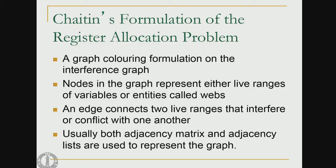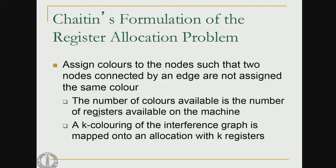We require both the adjacency matrix and the adjacency list to represent the graph. The basic idea is to assign colors to the nodes such that no two nodes connected by an edge are assigned the same color. If we assign the same color it implies assigning the same register, which is why interfering nodes cannot be assigned the same color.